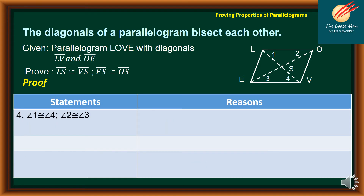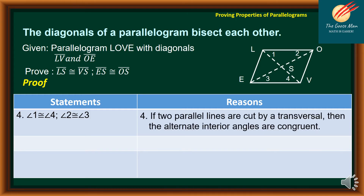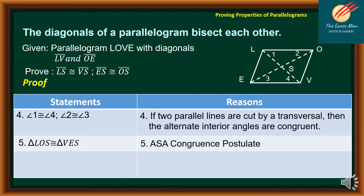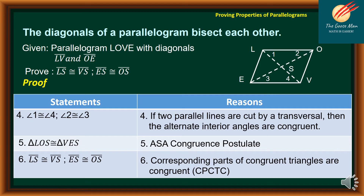For statement number four, angle 1 is congruent to angle 4, and angle 2 is congruent to angle 3 — because if two parallel lines are cut by a transversal, then the alternate interior angles are congruent. For statement number five, triangle LOS is congruent to triangle BES — the reason is ASA congruence postulate. For number six, therefore, line segment LS is congruent to line segment BS, and line segment ES is congruent to line segment OS — because corresponding parts of congruent triangles are congruent.